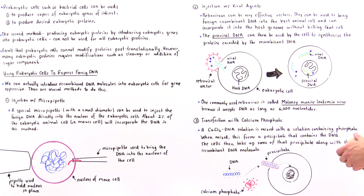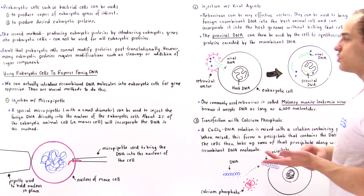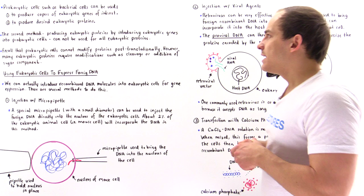A common type of retrovirus used when working with mouse cells is the Moloney murine leukemia virus. This virus is used because it can accept DNA molecules as large as 6,000 nucleotides in length.